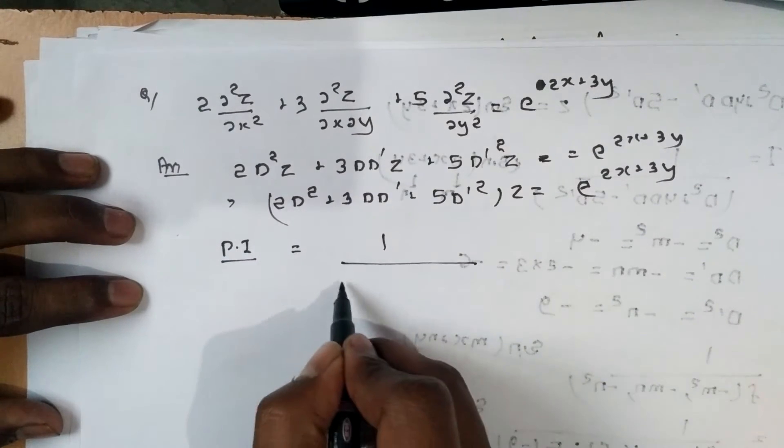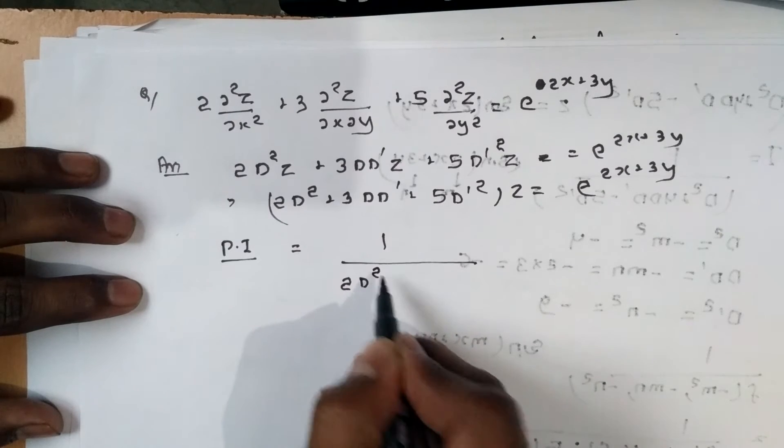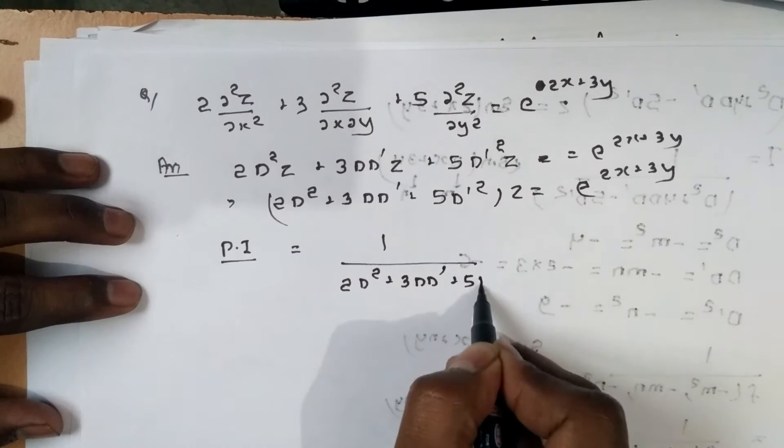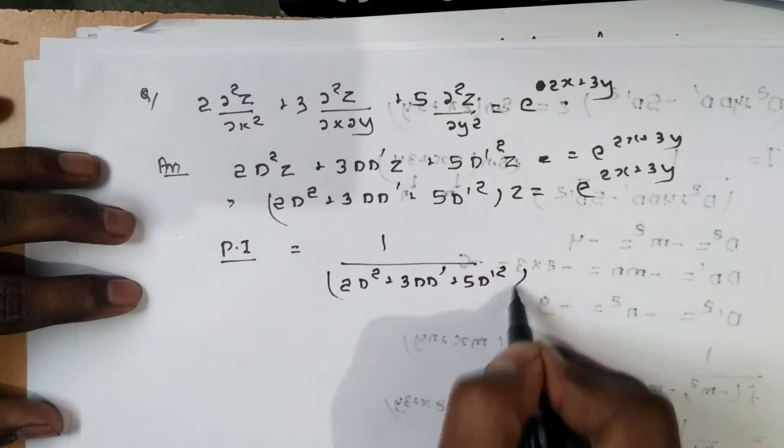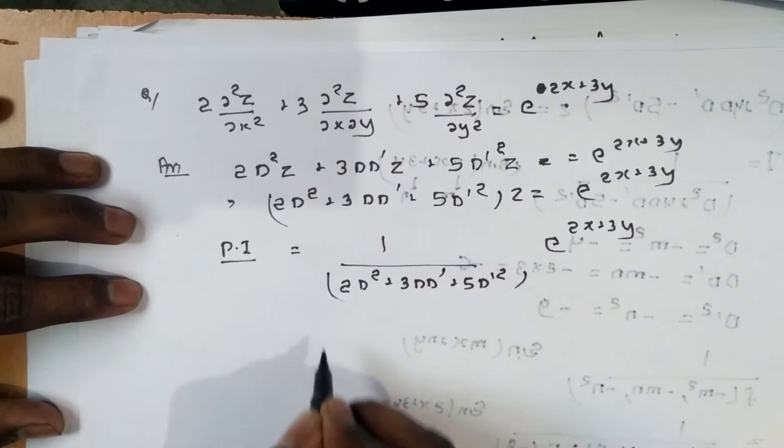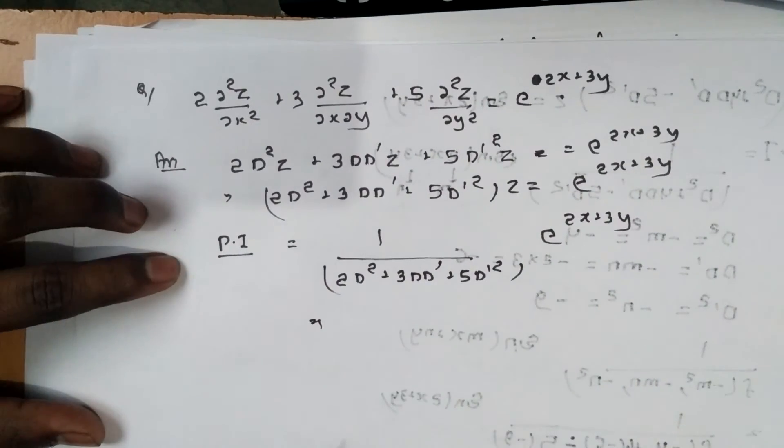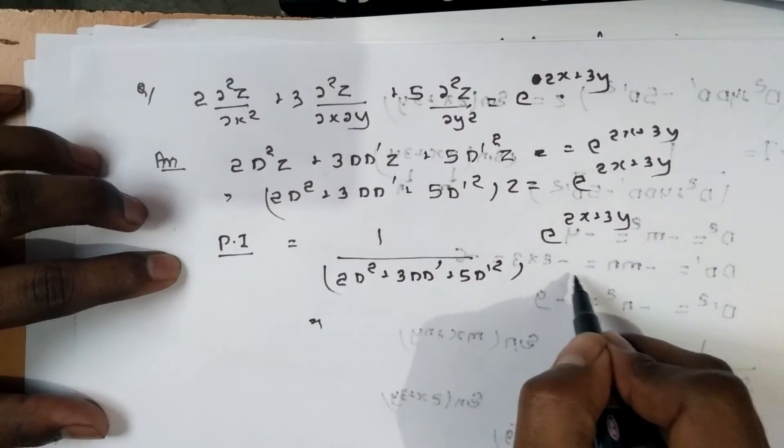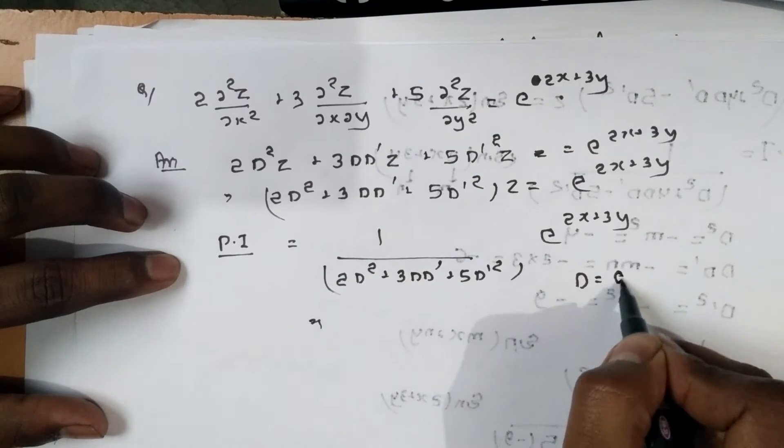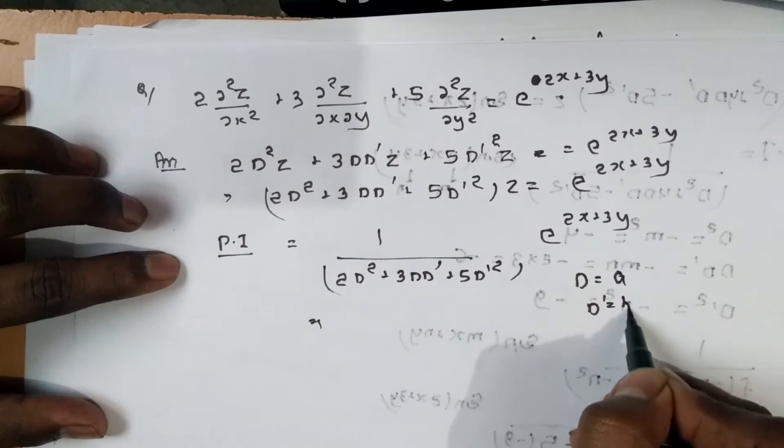PI = 1/(2D² + 3DD' + 5D'²) e^(2x+3y). In place of D we write a, and D' we write b.